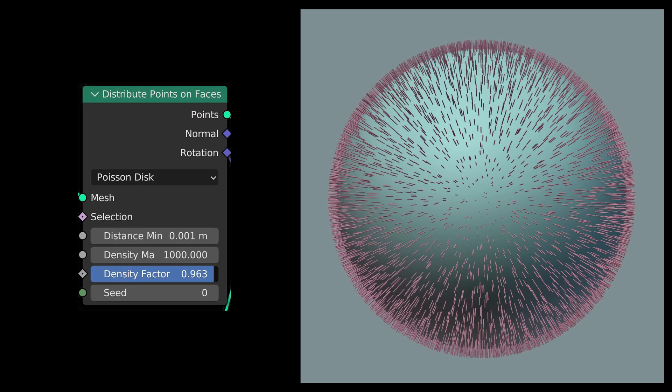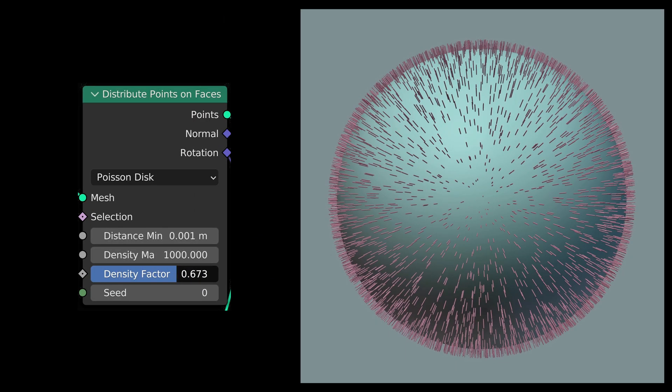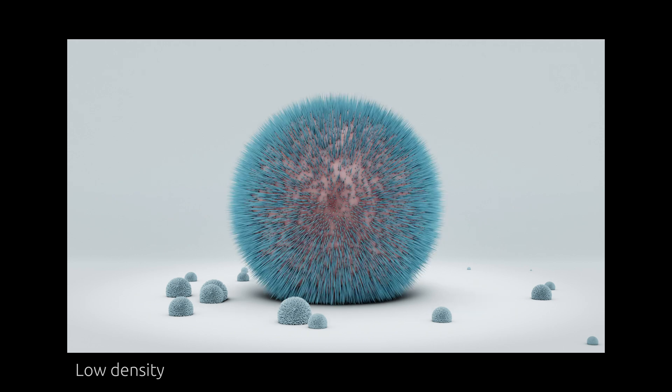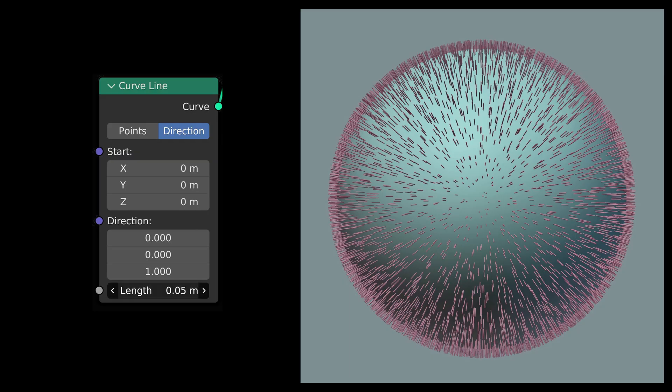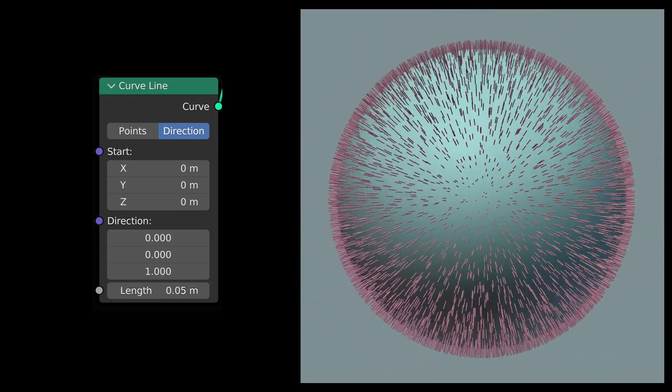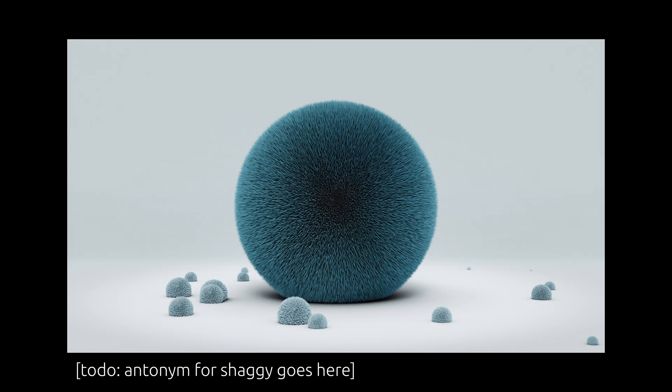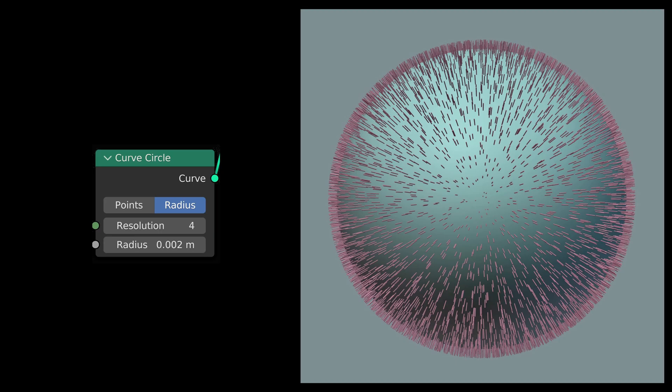We can use the distribute points node to change the density of the fuzz and drastically change the appearance of our model, while the curve line node lets us change the length of the fuzz strands and make the model look more or less shaggy. Finally, the curved circle node allows us to set the thickness of the strand.